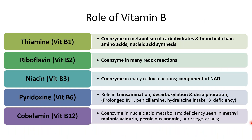Vitamin B is a complex of many vitamins. Vitamin B1 (thiamine) is an important coenzyme in carbohydrate and branched-chain amino acid metabolism. Vitamin B2 (riboflavin) is a coenzyme in redox reactions. Niacin (B3) is a component of NAD. Pyridoxine (B6) plays a role in transamination, decarboxylation, and desulfuration; prolonged intake of isoniazid, penicillamine, and hydralazine can predispose to pyridoxine deficiency.